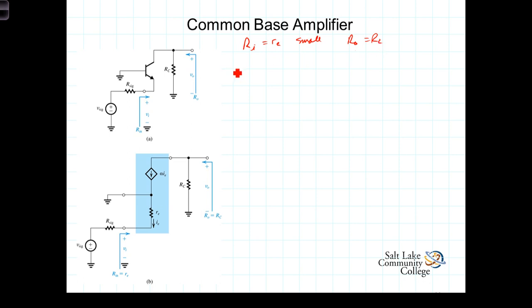Now let's calculate the open circuit current gain. As we've done in the past, V-out is simply equal to negative alpha I-sub-E times R-sub-C. And we can see here at the input I-sub-E is equal to, notice the reference direction, so I-sub-E is going to be equal to negative V-in over R-sub-E.